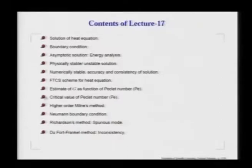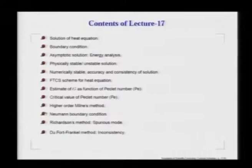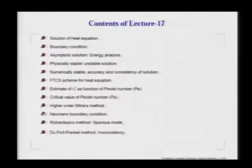Having discussed the FTCS method, we will show that if we are a little more restrictive in terms of spatial and temporal discretization, we can get higher accuracy — one such method is due to Milne. This will be followed by a discussion of handling boundary conditions given not in terms of the function value, but in terms of its derivative — these are called Neumann boundary conditions. We will talk about the Neumann boundary condition and how they are handled using the ghost boundary concept.